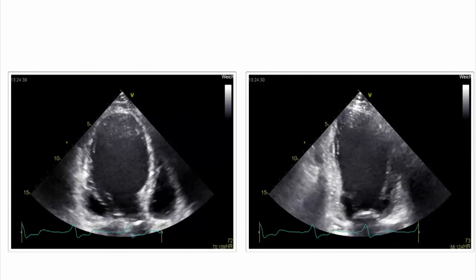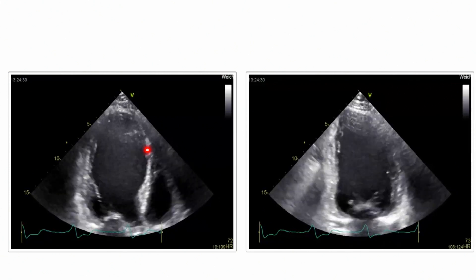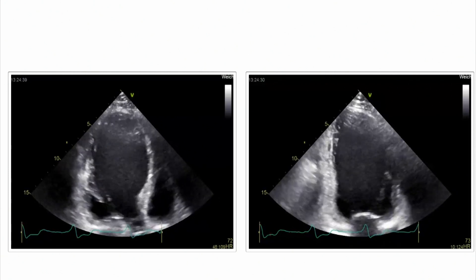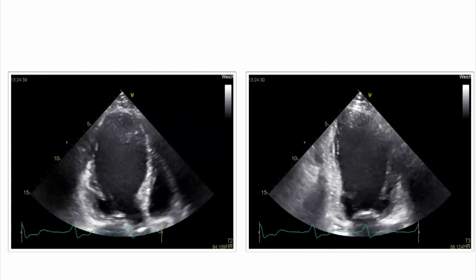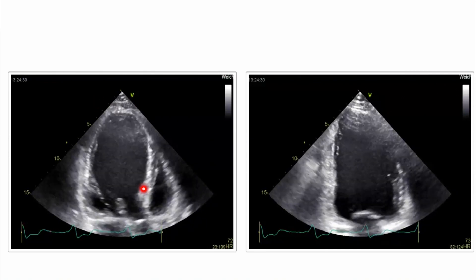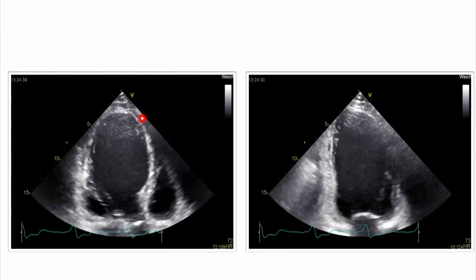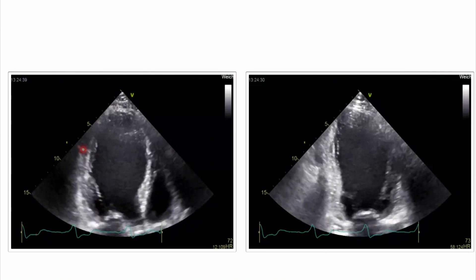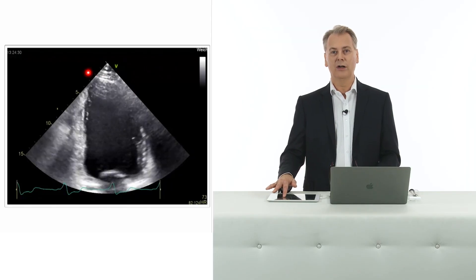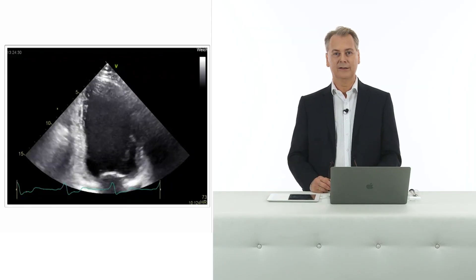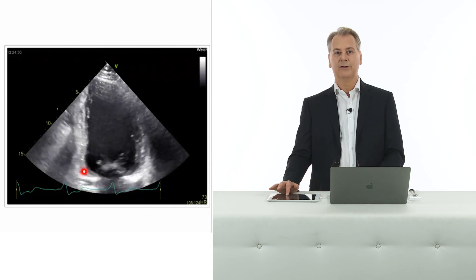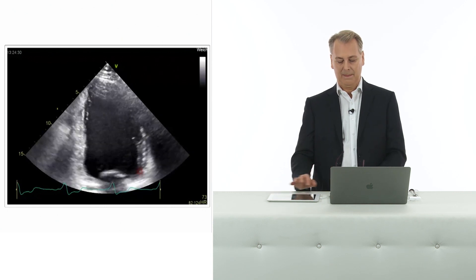Here is the apical long axis view and the two-chamber view. If you're good at detecting regional differences, you will see that the anteroseptal region, the apical region, and even the anterior wall are not contracting normally. There is better contraction here in the basal segments.